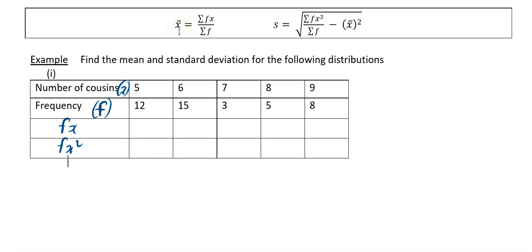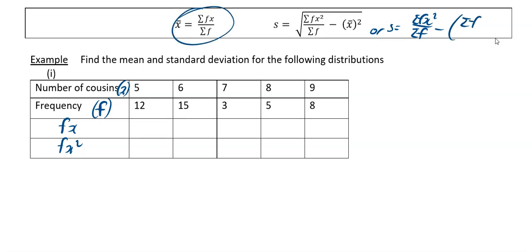What we're going to have to introduce is an fx column and an fx squared column. Your formula for your mean x-bar is sigma fx — that's the frequency times the corresponding x value, all added up — divided by your sum of all your f's. Your formula for standard deviation when you've got frequencies involved is the square root of sigma fx squared divided by sigma f, minus your mean squared. Or, the version I prefer: the square root of sigma fx squared divided by sigma f, minus sigma fx divided by sigma f, and that whole thing is squared, then square rooted. So that's your s, your standard deviation, and your mean.